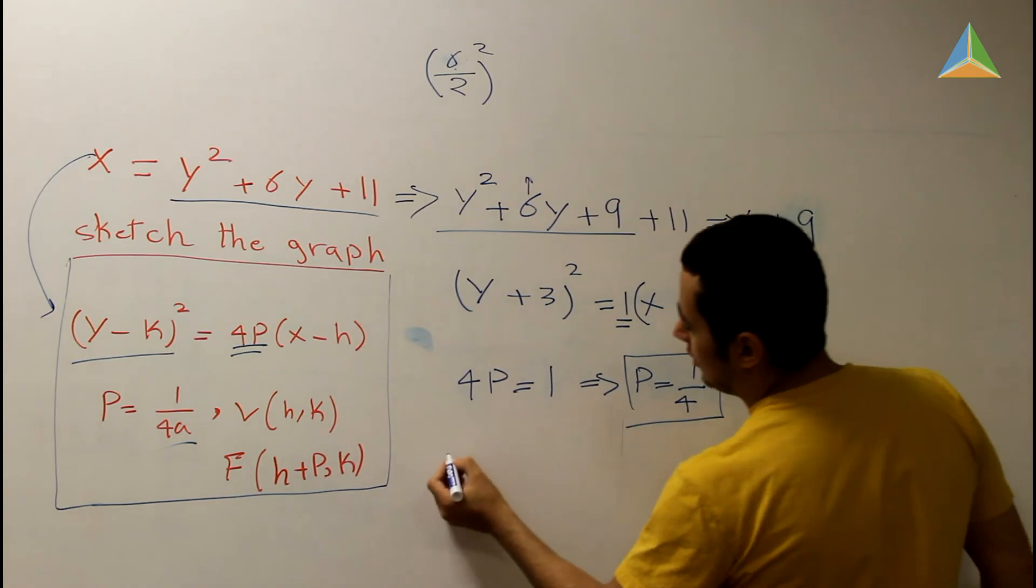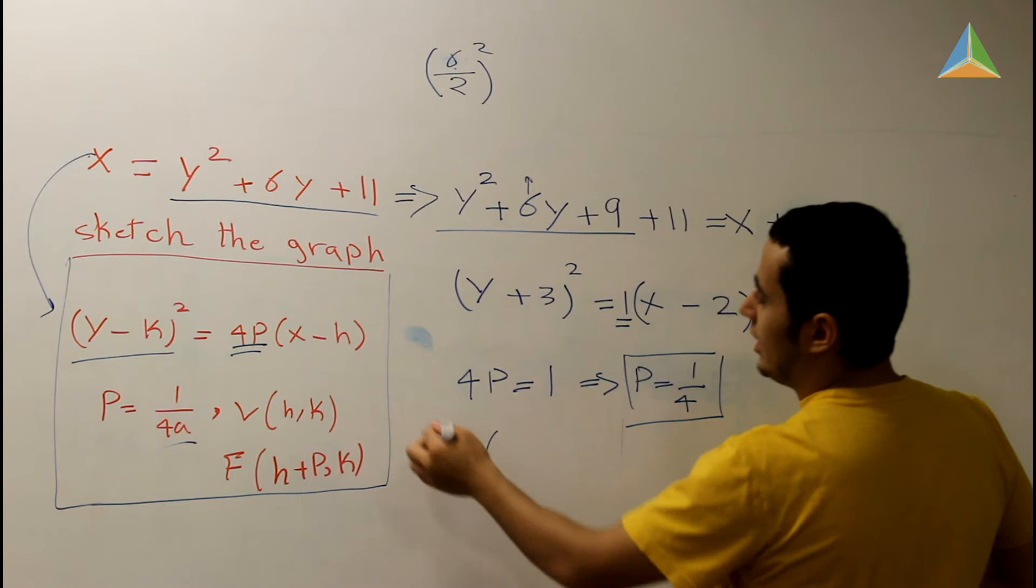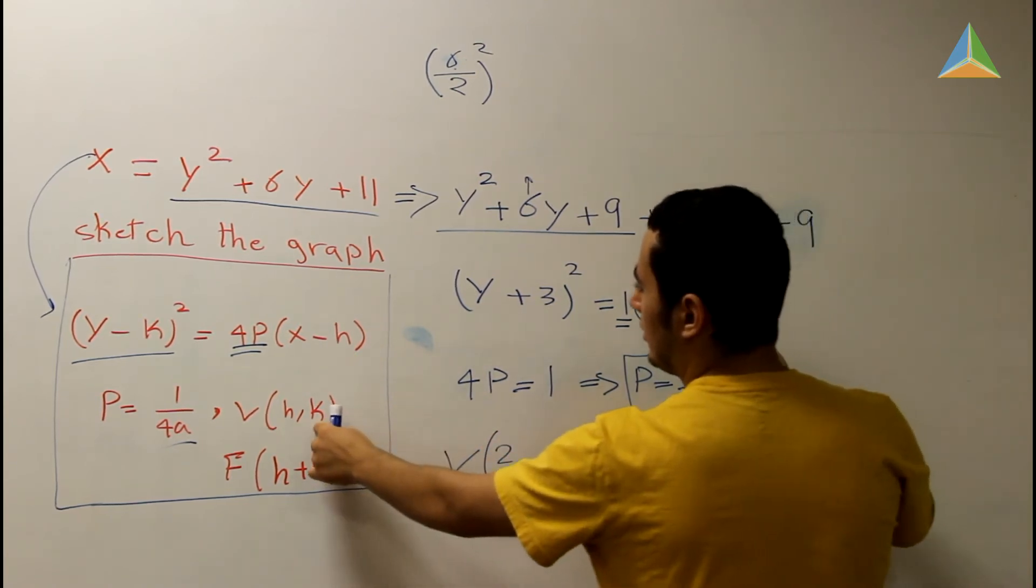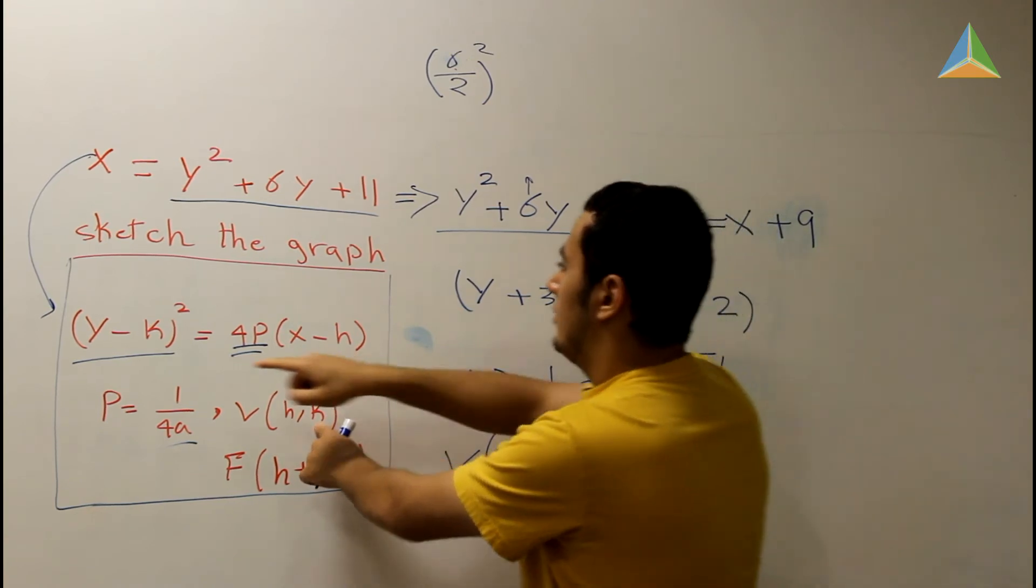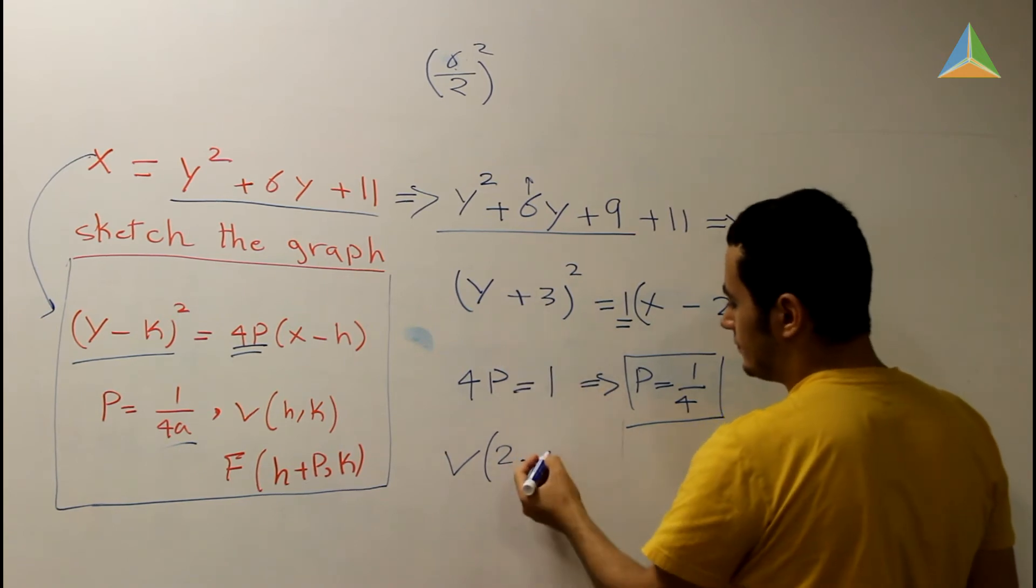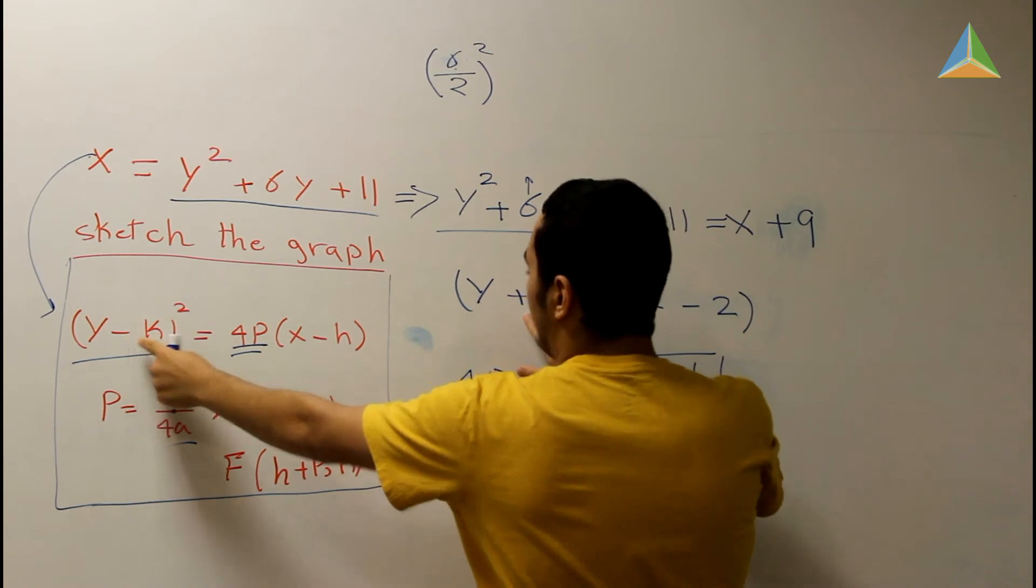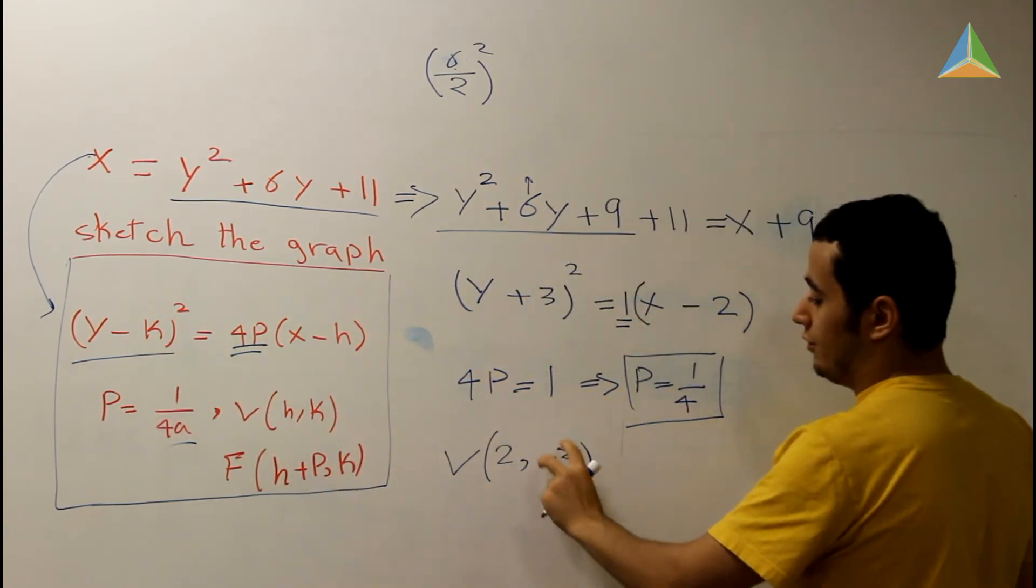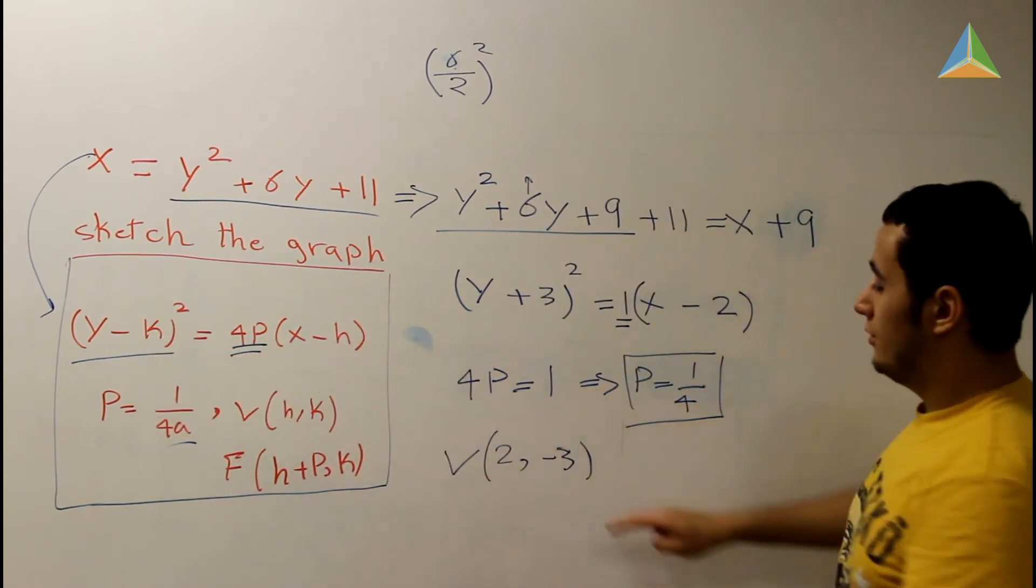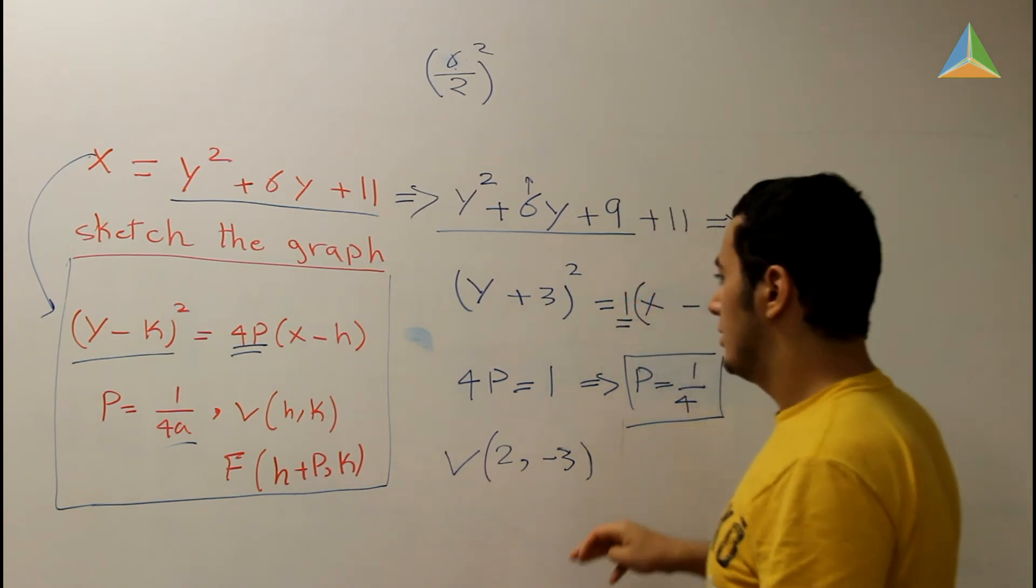And we need the vertex. The vertex is (h,k). We have h here is 2. We have k here, which is -3. Why negative 3? Because our equation is negative and here is positive. That means this value is negative. Because if you plug -3 here, you put -3 here, it's going to be y + 3. So this is why we have -3. You want to make sure that you don't make this mistake.